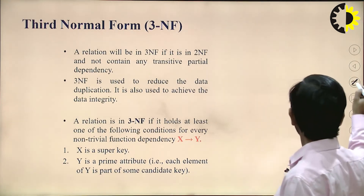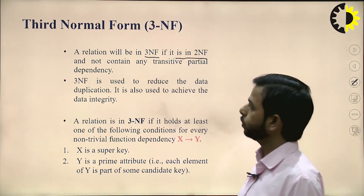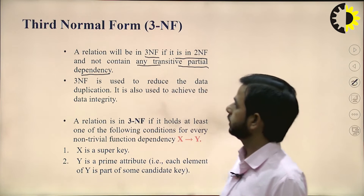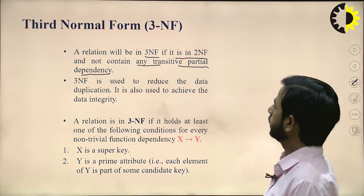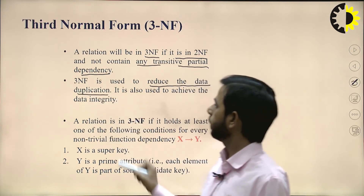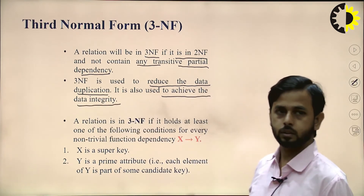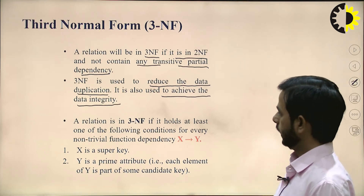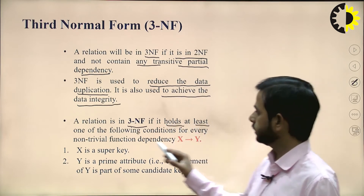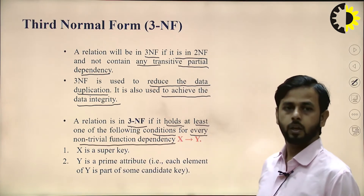A relation will be in 3NF if it is in 2NF and does not contain any transitive dependency. 3NF is used to reduce data duplication and to achieve data integrity. A relation is in 3NF if it holds at least one of the following conditions for every non-trivial functional dependency X → Y.